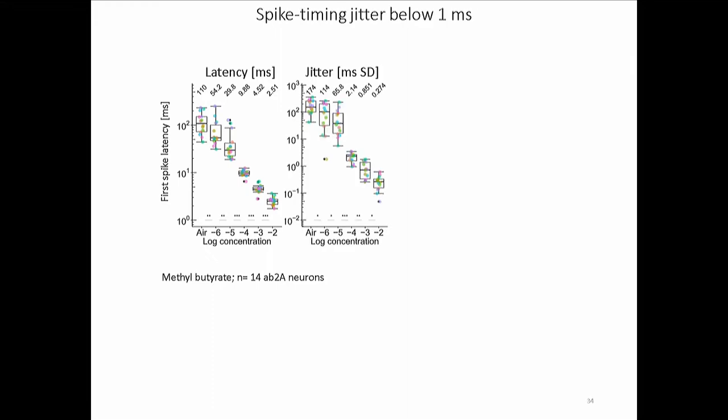We then quantified precision by measuring the standard deviation of first spike latencies, which we call jitter, also given in milliseconds. As you increase concentration, jitter goes down to below one millisecond. So odor transduction is not only fast, it's also temporally very precise — in fact in the range of the jitter of mechanosensory or visual neurons. It's not much less precise than these temporally very precise mechanical or even auditory receptor neurons.